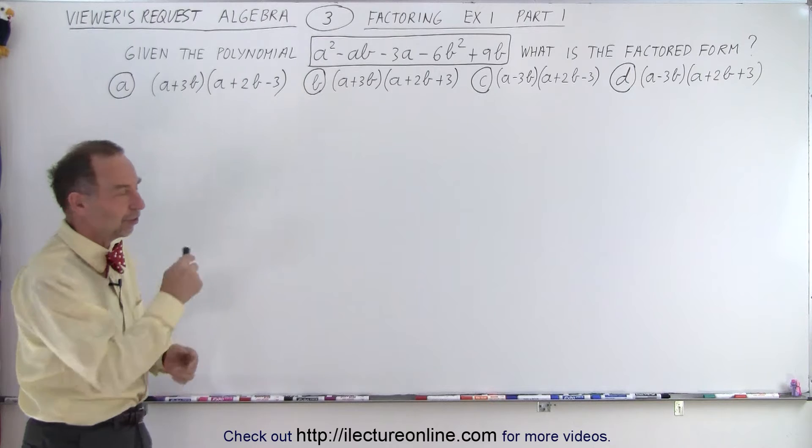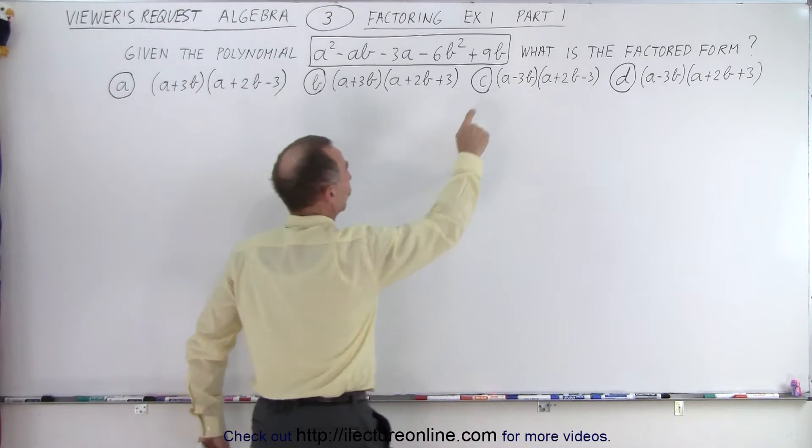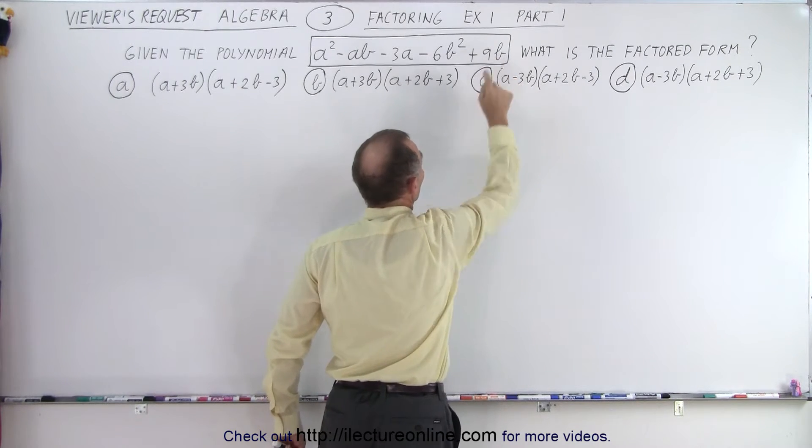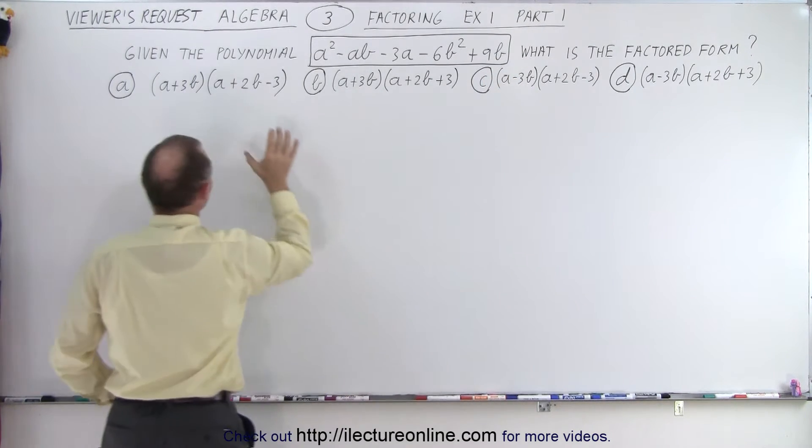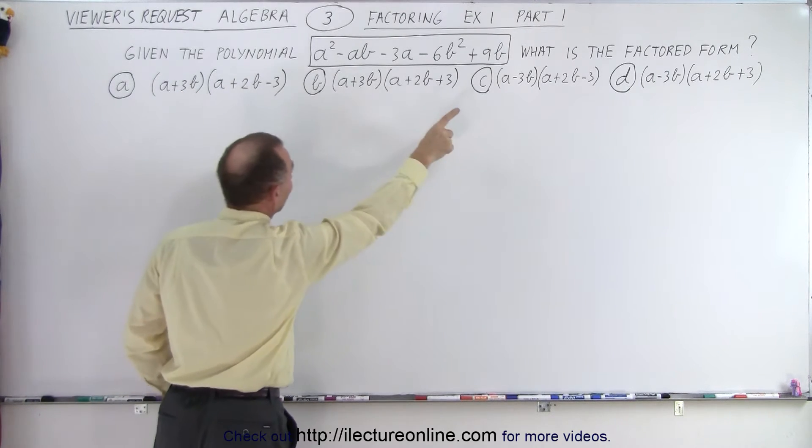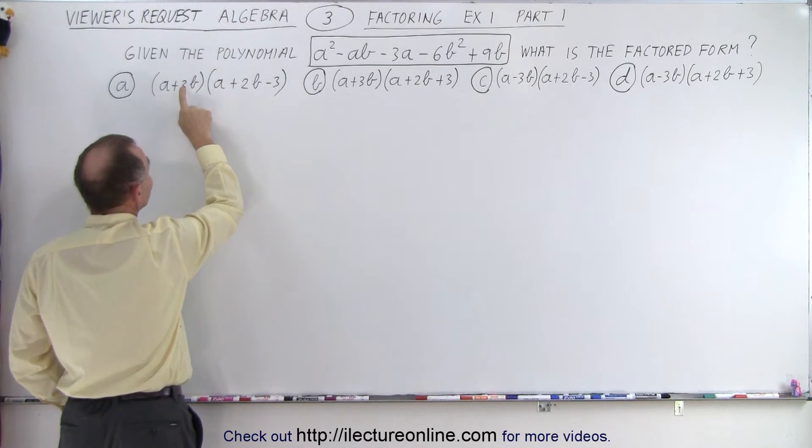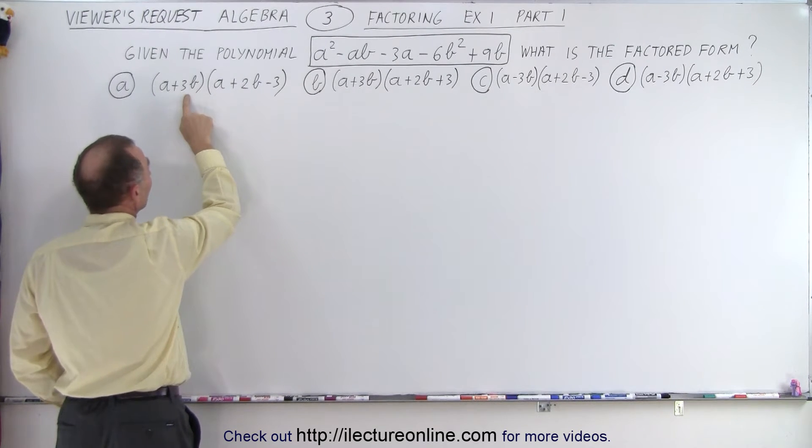First, what we do is we'll take a look at the last term, and we get a 9b. This means that if I multiply something in the trinomial with something in the binomial, I should get 9b. For example, a negative 3 times a positive 3b gives me a minus 9b, but I have a plus 9b there.